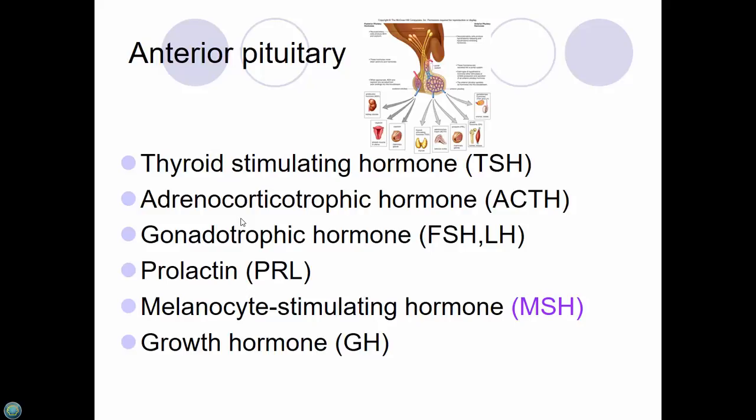Gonadotropic hormones: FSH is follicle-stimulating hormone and LH is luteinizing hormone. Both males and females have all of these hormones — they're identical, just the amounts differ. Follicle-stimulating hormone causes production of sperm in males and eggs in females. Luteinizing hormone helps with the production of estrogen but mainly testosterone. They work together, so if either isn't produced at normal levels, the downstream hormone won't be either.